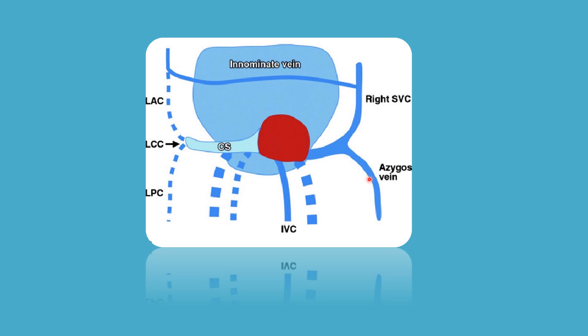The entire blood from the cephalic and cardinal parts of the body is now received only by the right horn of the sinus venosus. Due to this heavy load of blood, the right horn of the sinus venosus enlarges considerably, and this later forms the smooth part of the right atrium.